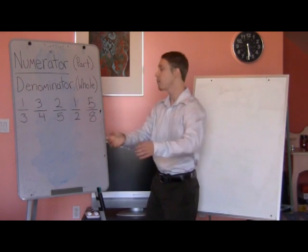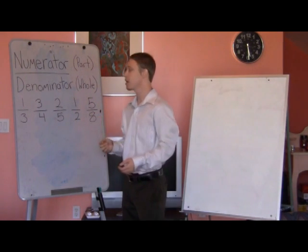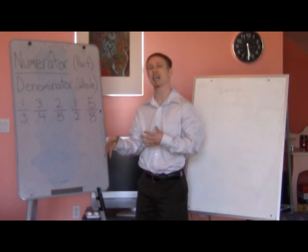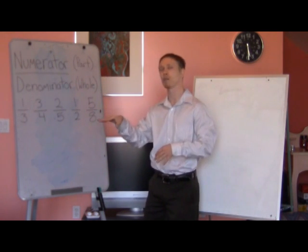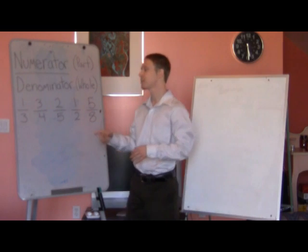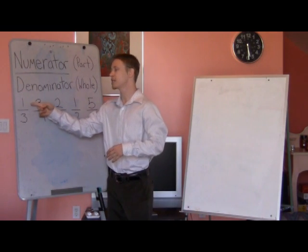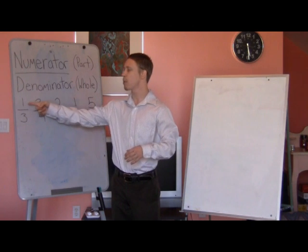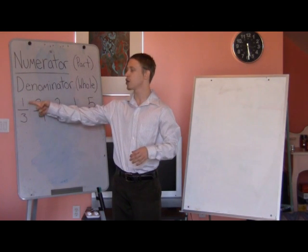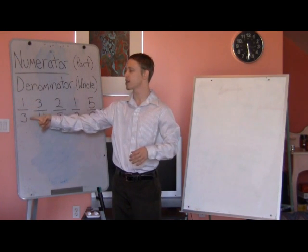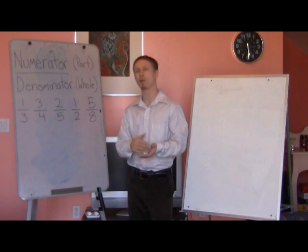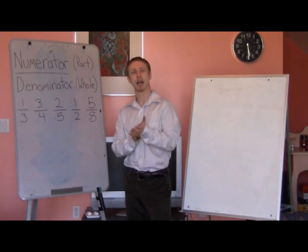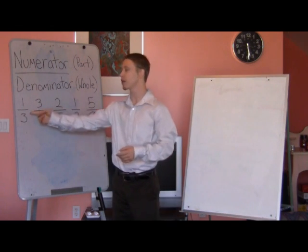I want to see if everybody can remember how we say these fractions. We went over last class how we would say fractions when we see them. So this fraction here — if we have a one on top and a three on the bottom, this is our part, this is our whole, this is our numerator, this is our denominator. Does anyone know how we might say this fraction? Exactly — this is one third.